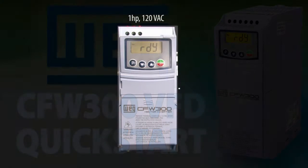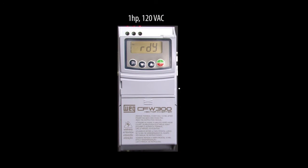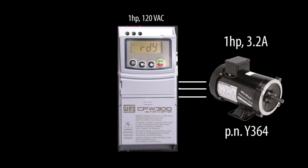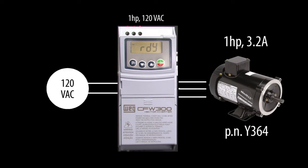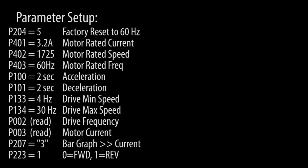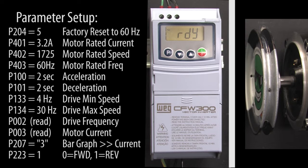In this video we'll use a 1 horsepower WEG CFW300 drive to control a motor from a single phase 120 volt supply. These are the parameters we're going to set and the values we're going to use in this demo. Let's quickly walk through setting these just so you can get a feel for the flow of entering parameters.